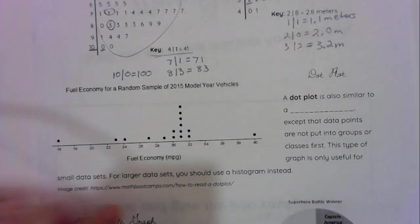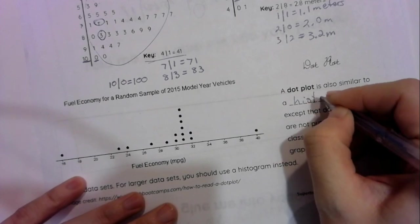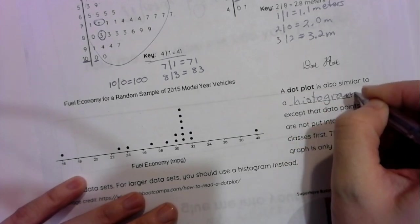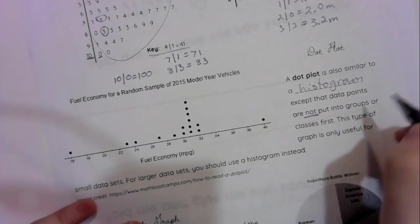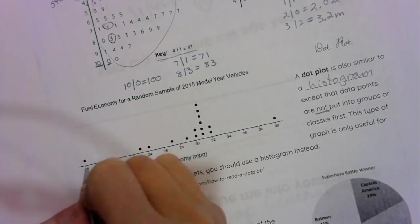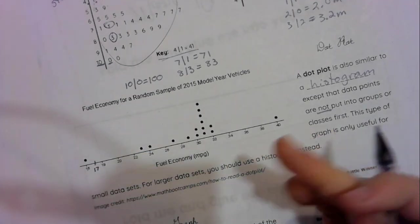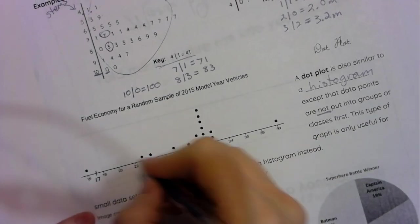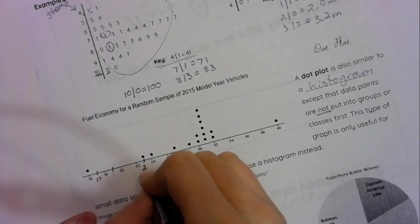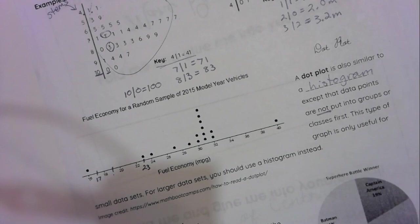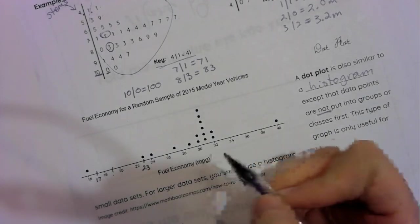Let's look at dot plots next. You've probably seen things like this before. Again, they kind of look like histograms except you're not grouping your data points. So we have 16, 17 would be right there. They didn't write it, but it would be right there. 18, 19, 20, 21, 22. This is 23, 24, and so on. So the numbers are all there individually, even if you don't write every single one.